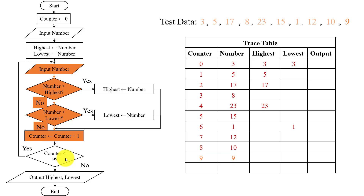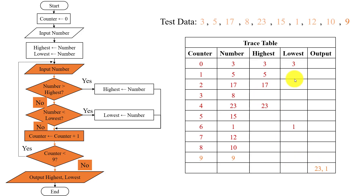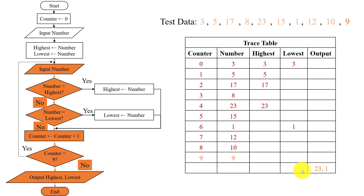Increment the counter; counter is now 9. 9 is less than 9 — no, 9 is equal to 9, so we move to output. Output should be highest value and lowest value. The current value of highest is 23 and lowest is 1, so we place 23 and 1 in the output column. You can see that we haven't filled all the rows of lowest and highest — we skip rows where the value wasn't updated and leave those spaces as they are.